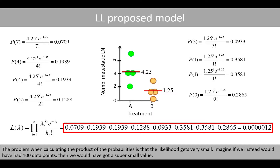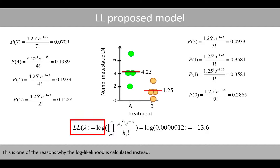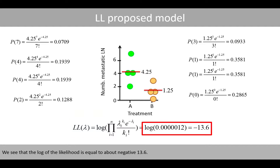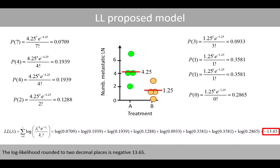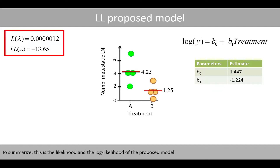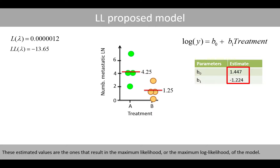The problem when calculating the product of these probabilities is that the likelihood gets very small. Imagine if we instead had 100 data points — we would get a super small value. This is one of the reasons why the log likelihood is calculated instead. We see that the log of the likelihood is equal to about negative 13.6. Note that the log likelihood can also be calculated by summing the log of the probabilities. The log likelihood rounded to two decimal places is negative 13.65. This is the likelihood and the log likelihood of the proposed model.